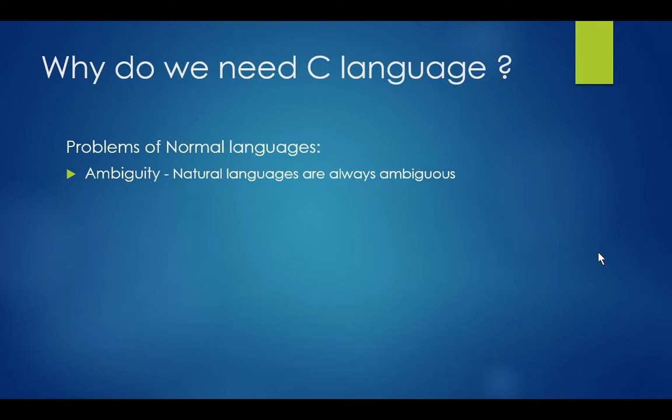We always want the computer to give a certain output for a certain input. We do not want the computer to get confused. That is why we can't use a normal language as a programming language.